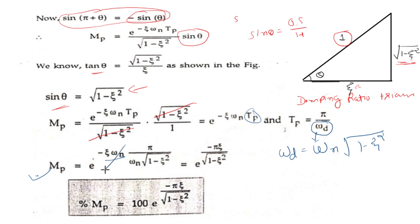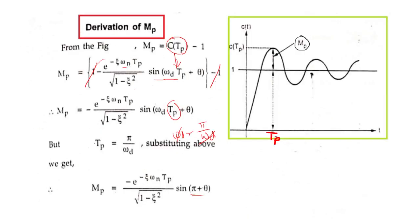The ωn terms cancel, and the remaining term is e raised to minus π·zeta upon under root 1 minus zeta squared. Converting this to percentage, we multiply by 100, so the percentage peak overshoot is: 100 times e raised to minus π·zeta upon under root 1 minus zeta squared. This formula is frequently asked in exams, so students are requested to please practice this derivation. If you have any doubt, comment in the comment section.